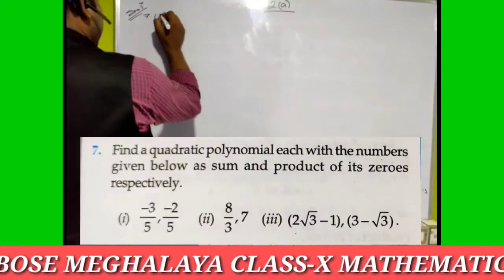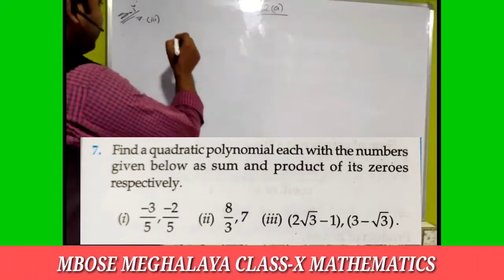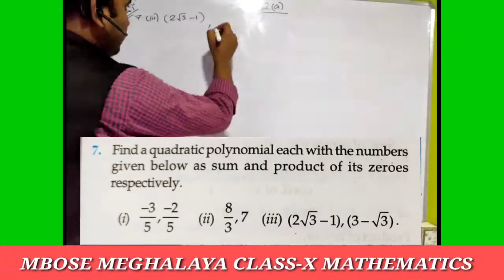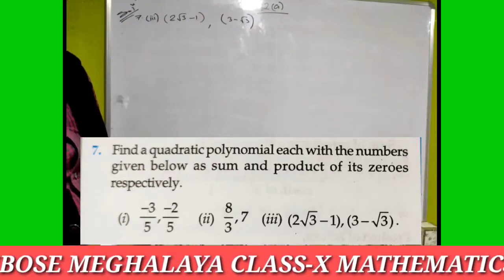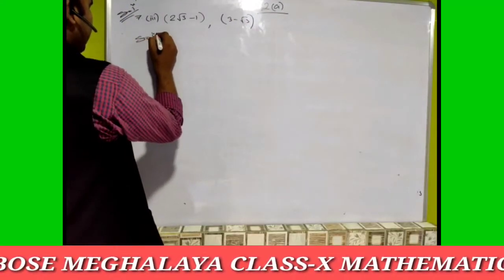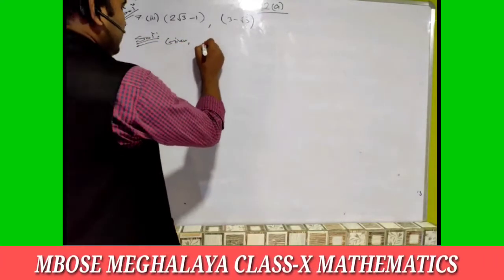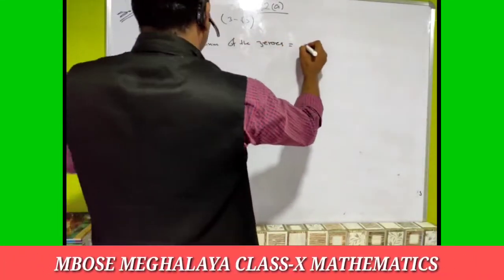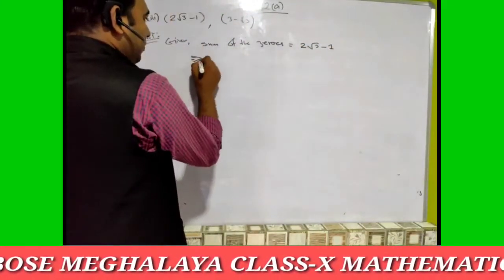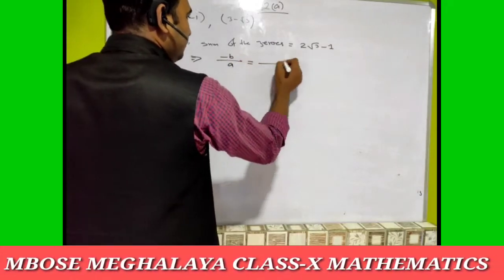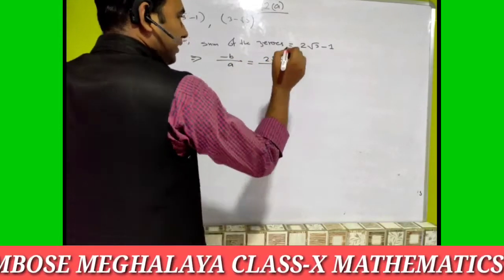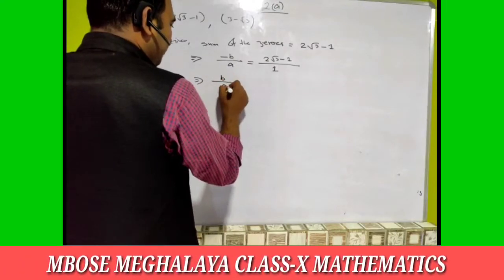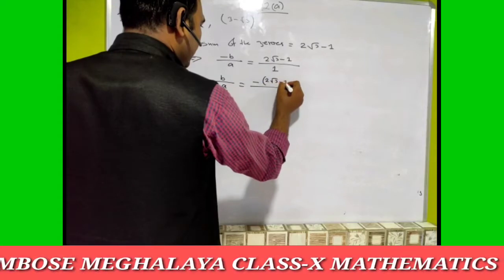Sub-number three: the given values are sum of the zeros equals two root three minus one, and product of the zeros equals three minus root three. Solution: sum of the zeros formula is minus b by a equals two root three minus one. Since the denominator is one, we take the minus to the right side, giving b by a equal to minus of two root three minus one, over one.